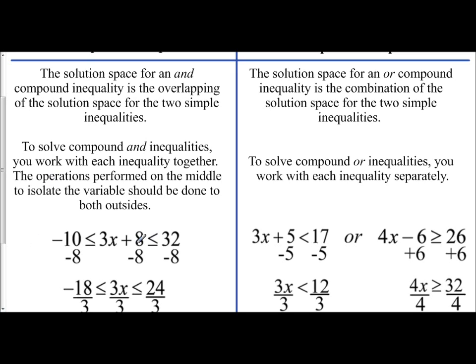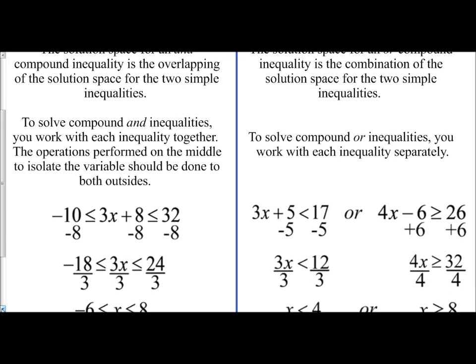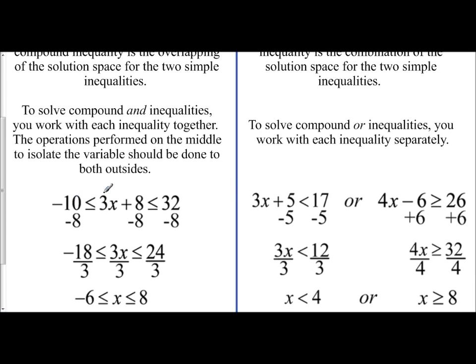what we want to do is we look at this example to solve. What you want to do is perform the operation on the middle. So if we look at this example, we have negative 10 is less than or equal to 3x plus 8, which is less than or equal to 32.